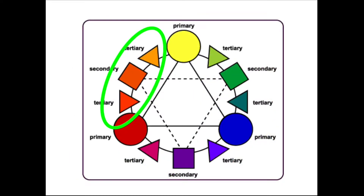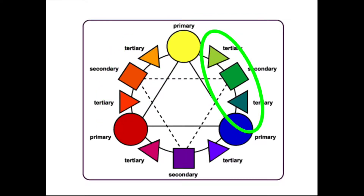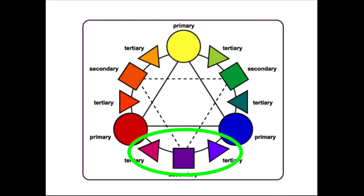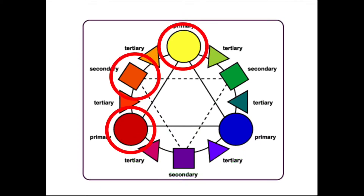Here are some different examples of analogous colors. These warm colors, these cool colors, and also these other cool colors are all next to each other on the color wheel and appear very similar to each other. These are two different from each other, both in distance as well as appearance, as well as the primary colors as a non-example.